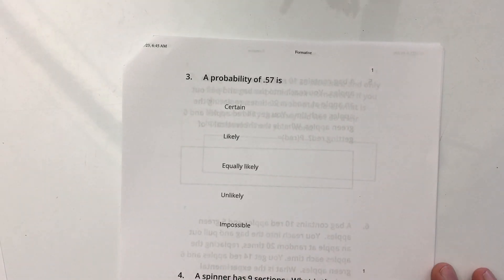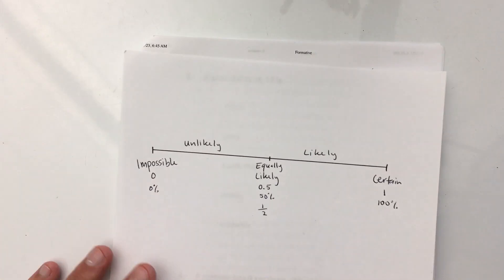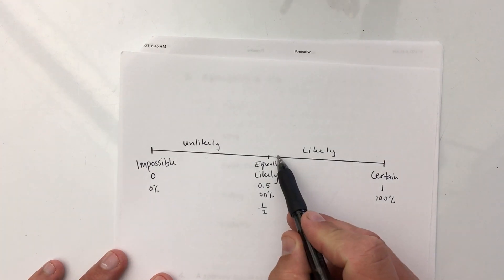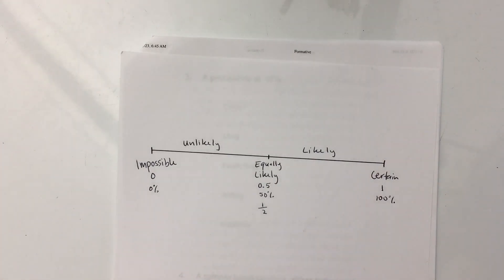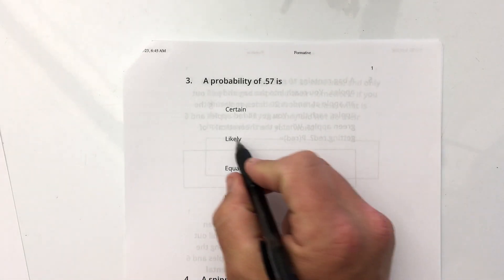And 0.57, if we go back to our number line, this would be like right around here probably, right? It's just a little bit greater than 0.5 because that's the same as 0.50. So this would be likely.